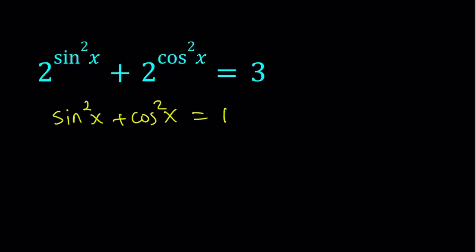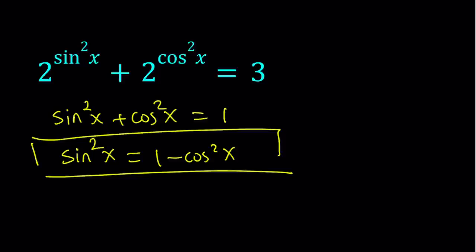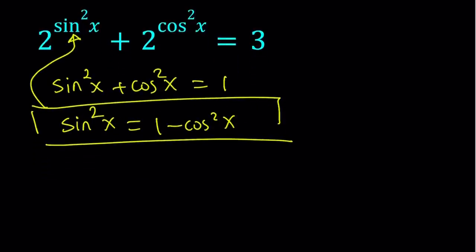So from here I can go ahead and isolate sine squared. And sine squared can be written as 1 minus cosine squared. So this is what I would like to use. I'm going to substitute this into my equation and that is going to simplify the equation.